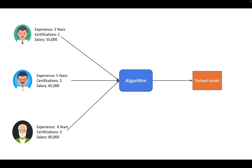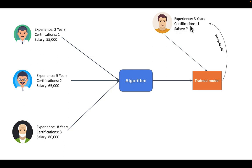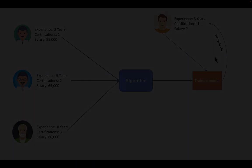When we pass the experience and certification for a person, our model will make a prediction for the salary. As I mentioned earlier, you supply data to a computer and the computer finds patterns in that data — this process is called machine learning. We supplied this data, our algorithm found a pattern, and now based upon that pattern, our trained model can do predictions.